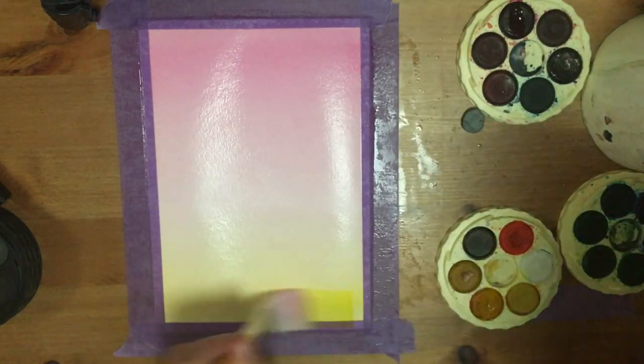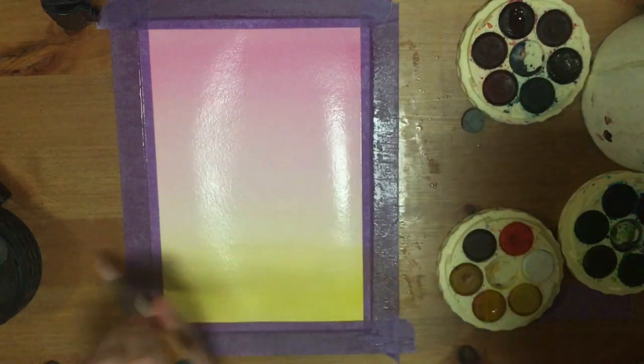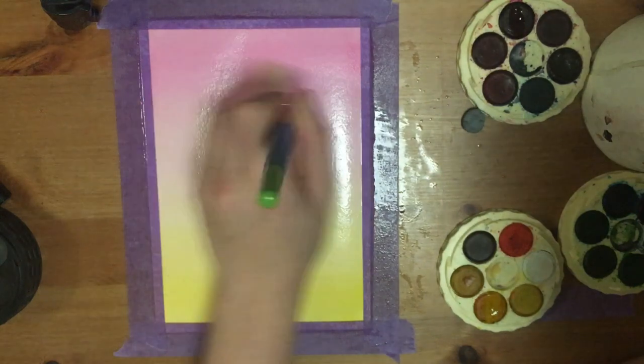And I'm just doing the same process that I did with the pink, slowly building up that yellow at the bottom of the page. And again just using water I'm thinning that yellow out through to the top of the page and painting it over the pink.